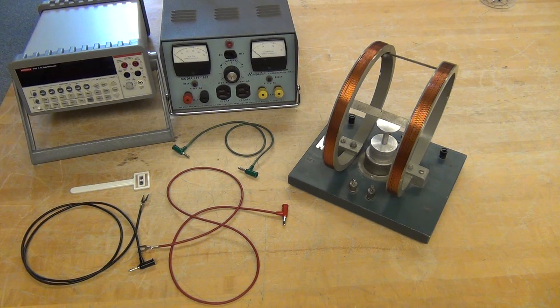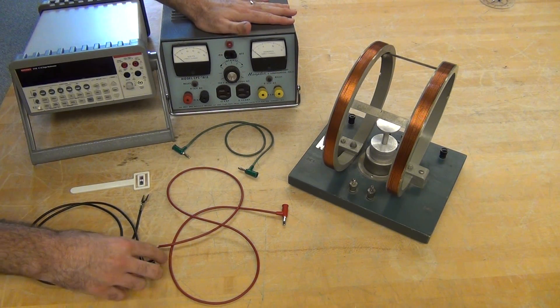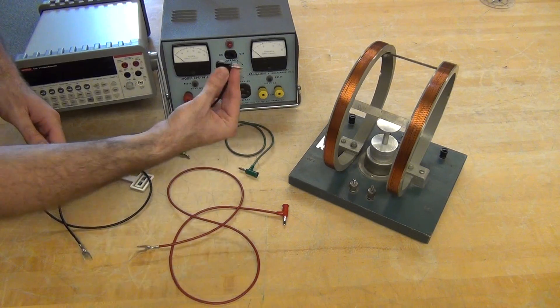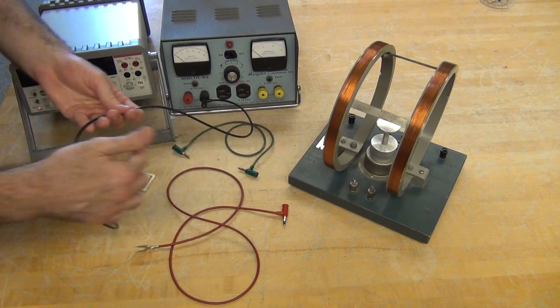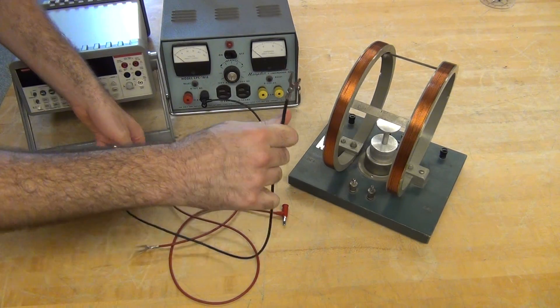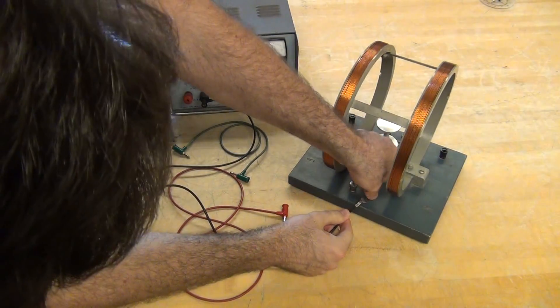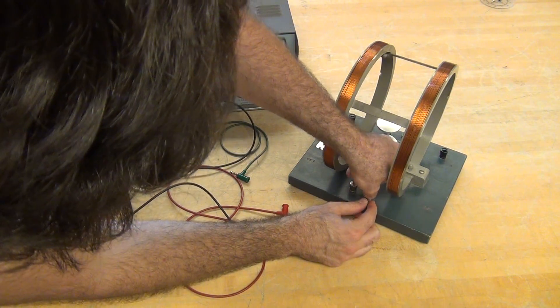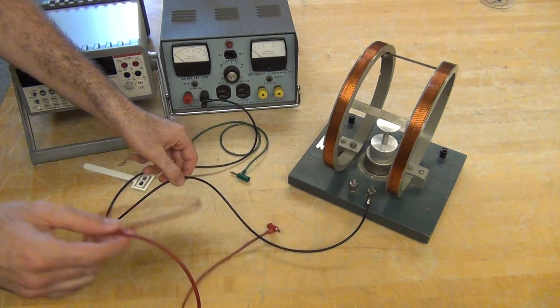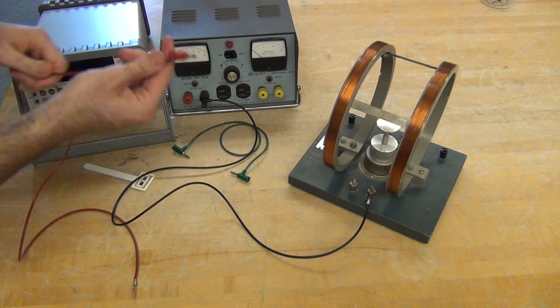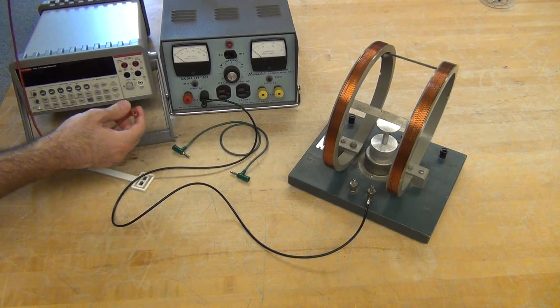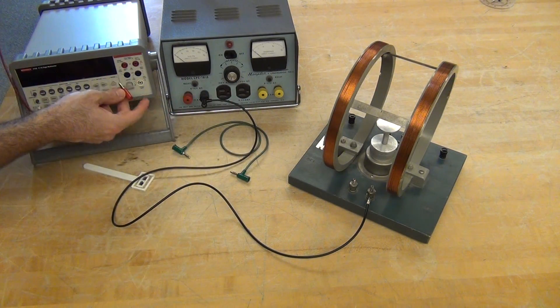So to power our coils we'll use our Hamden power supply. I'll take a banana to spade connection and connect to one of the posts on the coil. Then I'll take a banana to spade connection, not go right from the Hamden.